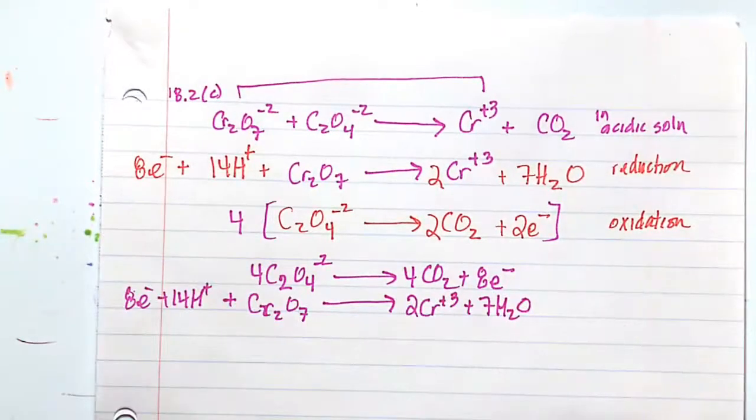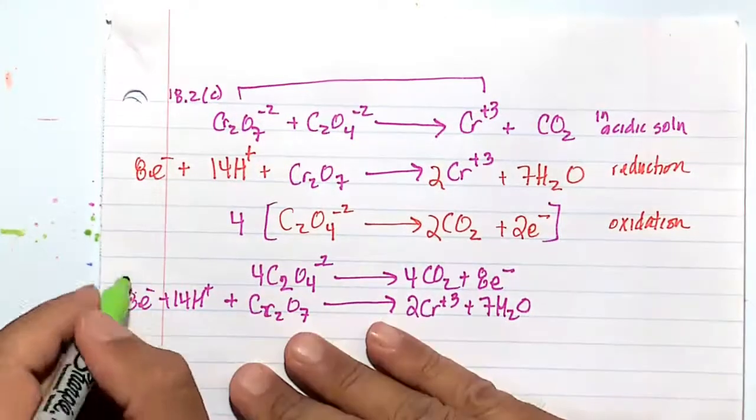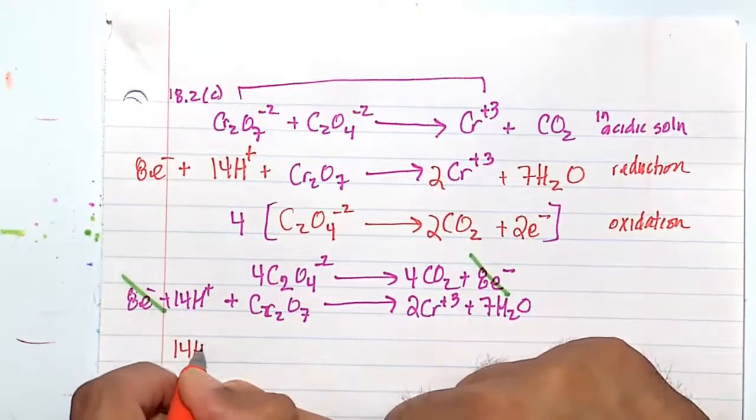All right, so rewriting this bottom reduction half reaction. We can go ahead and balance out our electrons. Eight electrons, free electrons, will cancel out with these eight free electrons. And I believe this is going to be our final answer of 14H plus.